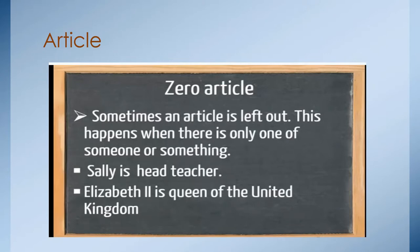Another thing that you have to know about the article is that there's something that you use the zero article or you don't use the article. Sometimes an article is left out. So, you don't use it. This happens when there is only one of someone or something. For example, right here, Sally is her teacher. Elizabeth II is the queen of the United Kingdom. We only have one Elizabeth II. So, we don't have to use THE because we are talking about something that is unique. We don't use AN Elizabeth II or A Elizabeth II or THE Elizabeth II. We only have one. So, it's Elizabeth II.